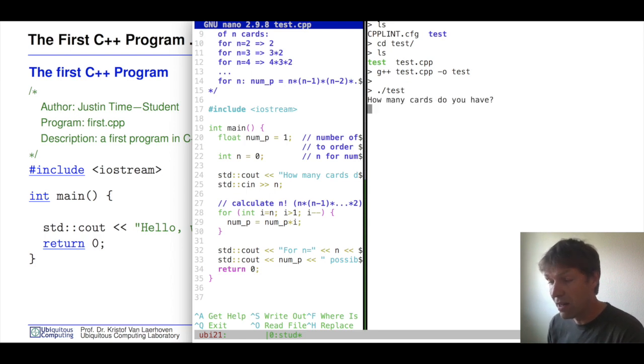And now let's execute tests. As you see, we can here now enter a number. How many cards do we have? Let's start with something small so we can actually check that it works. So if we have three cards, it should do three times two, and it should return six. There we go. So for n equals three, we have six possible card orders. That already fits.